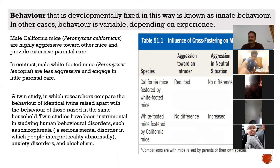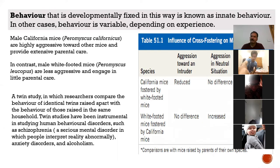Schizophrenia is a mental condition in which people interpret reality in an abnormal way. Identical twins studied in the same or different environments can show different outcomes for such conditions. Similarly, anxiety disorders and other behavioral conditions are studied using this twin model.